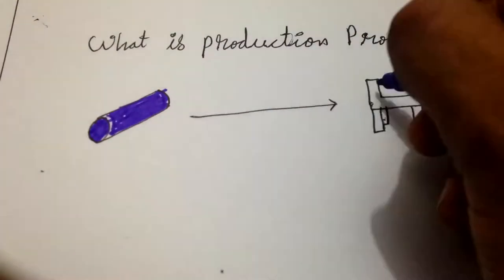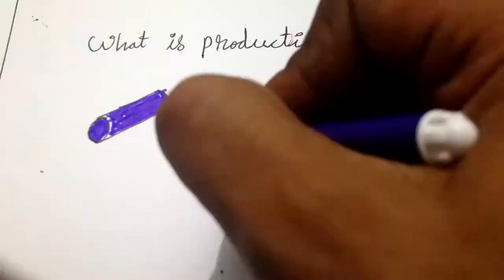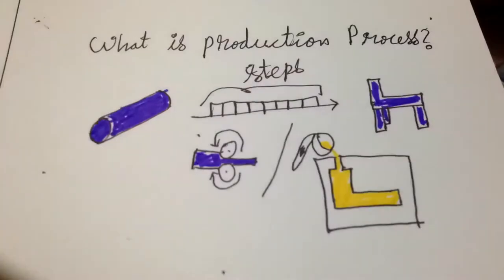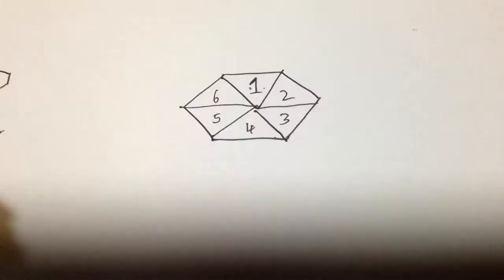What is production process? Production process of workpiece involves transforming a raw material from its original state to a finished state by changing its shape or the properties of the material in a series of steps. It is generally classified into six groups.